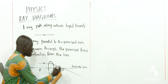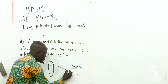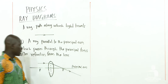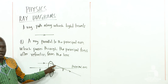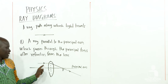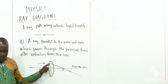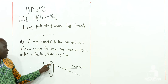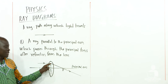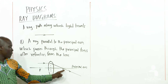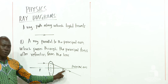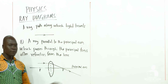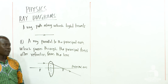A ray diagram is always represented with a straight line with an arrow. When this ray of light touches the lens, it is going to be refracted and it will pass through the principal focus of the lens.